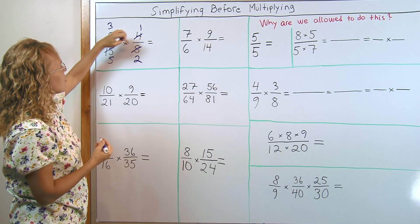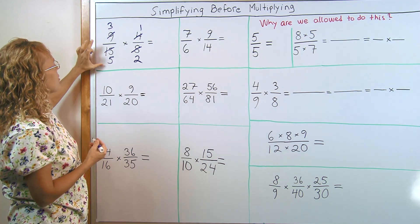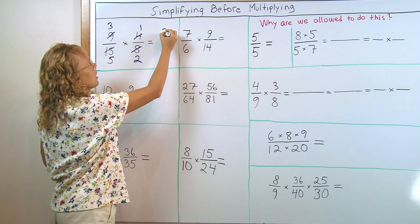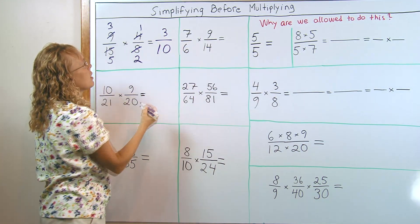So I have actually now 3 fifths times 1 half and it is marked like you saw me mark it. I scratch out, mark out the numbers and then write above them 3, 5, 1, 2. And now I multiply 3 times 1 equals 3 and then 5 times 2 equals 10.